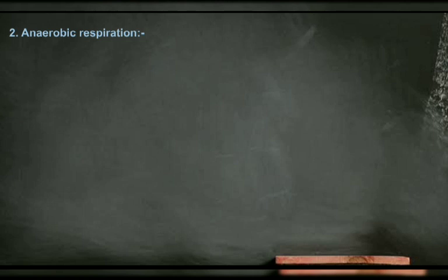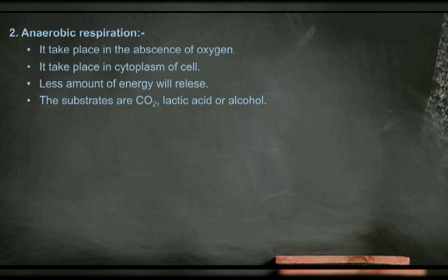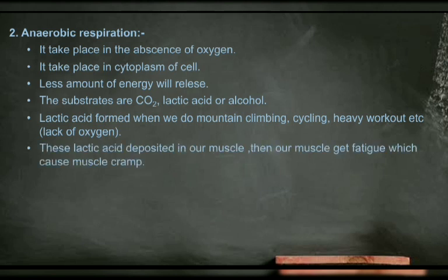The second type is anaerobic respiration. Anaerobic means oxygen does not involve — it takes place in the absence of oxygen, in the cytoplasm, and releases less energy. The products obtained include carbon dioxide, lactic acid, and alcohol. When we do heavy exercises like cycling, boxing, or mountain climbing — activities done in lack of oxygen — glucose breaks down to form lactic acid, which deposits in our muscles, causing muscle fatigue and muscle cramp.